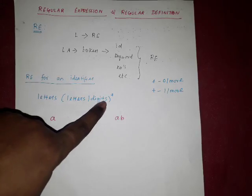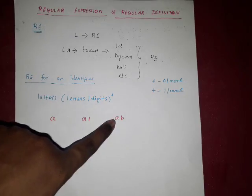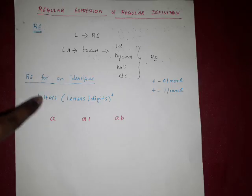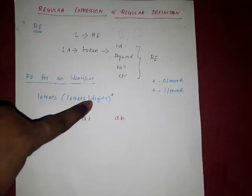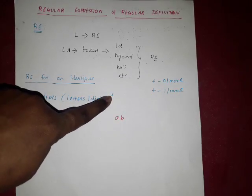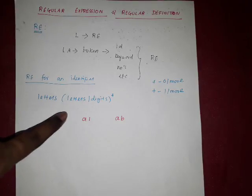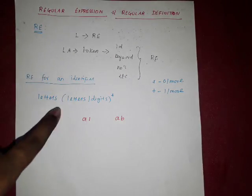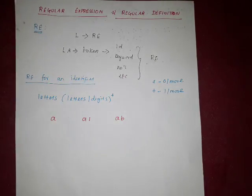In the case where a digit is not present and a letter occurs one time — letter 'a' followed by letter 'b' — these are also valid identifiers. So this is the regular expression for the identifier: letters followed by letters or digits with 0 or more times. This is a very important rule because based on these rules, lexical analysis identifies the tokens.